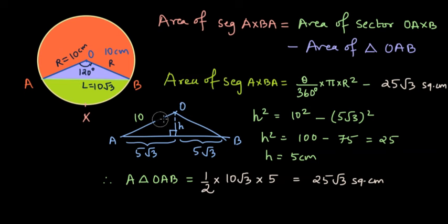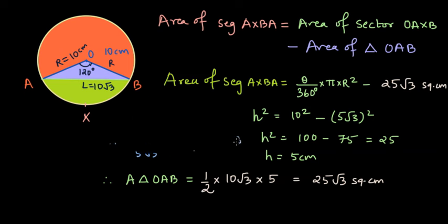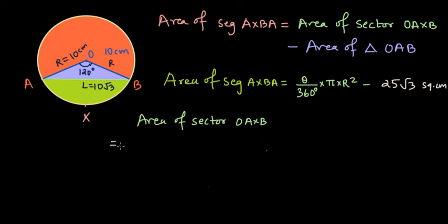And now let us proceed with finding out the area of the sector. Area of the given sector will be equal to 120 degrees divided by 360 degrees times pi times R square, which is 100. This gives us 100 by 3 pi square centimeters.